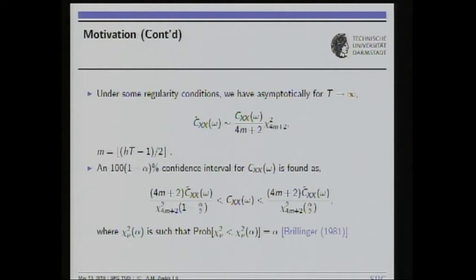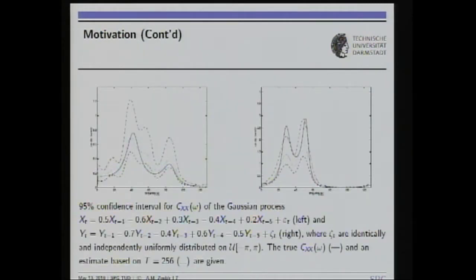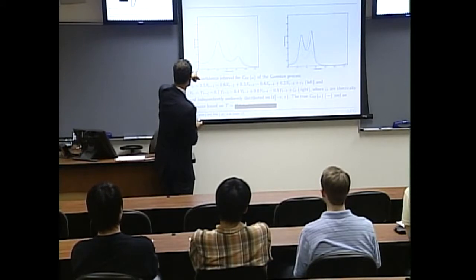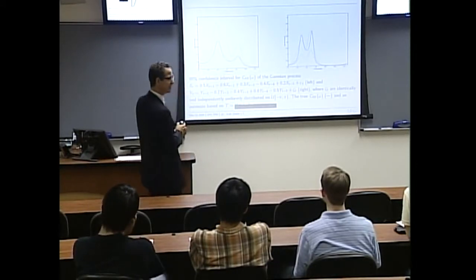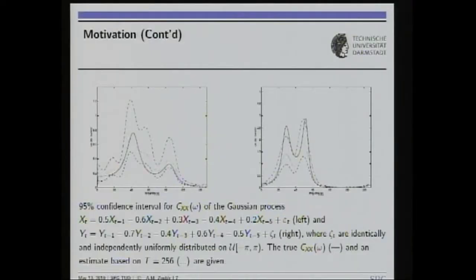Constructing such a confidence interval, on the left-hand side we have an AR process of fifth order with Gaussian innovations, and the true spectrum crosses the bounds — something not admissible. On the right-hand side we have an AR process with uniformly distributed innovations, deviating more from Gaussian. Similarly, the true spectrum is outside the bounds. This is a problem we want to solve.